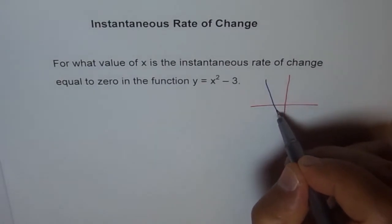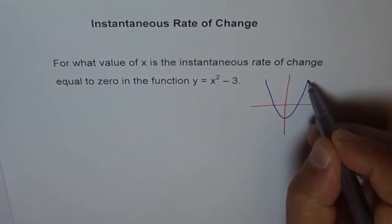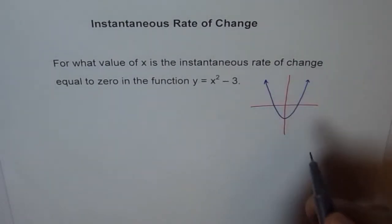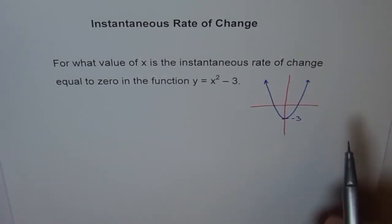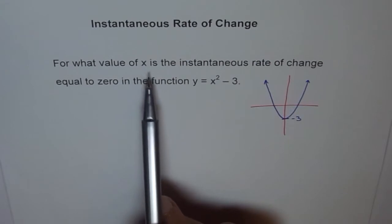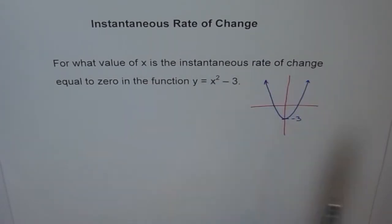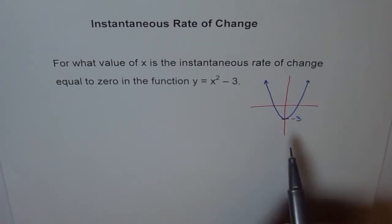So this could be like this. And where this is minus 3. So for what value of x is the instantaneous rate of change equal to 0? So for a parabola, it is always a vertex, and we see the vertex is here, the turning point.